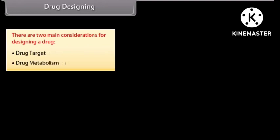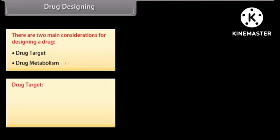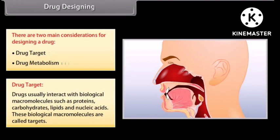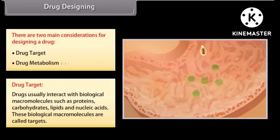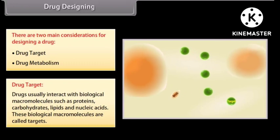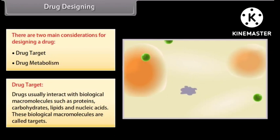There are two main considerations for designing a drug: drug target and drug metabolism. Drug target: drugs usually interact with biological macromolecules such as proteins, carbohydrates, lipids, and nucleic acids. These biological macromolecules are called targets. The correct choice of drug target is important to obtain good therapeutic effects of a drug.